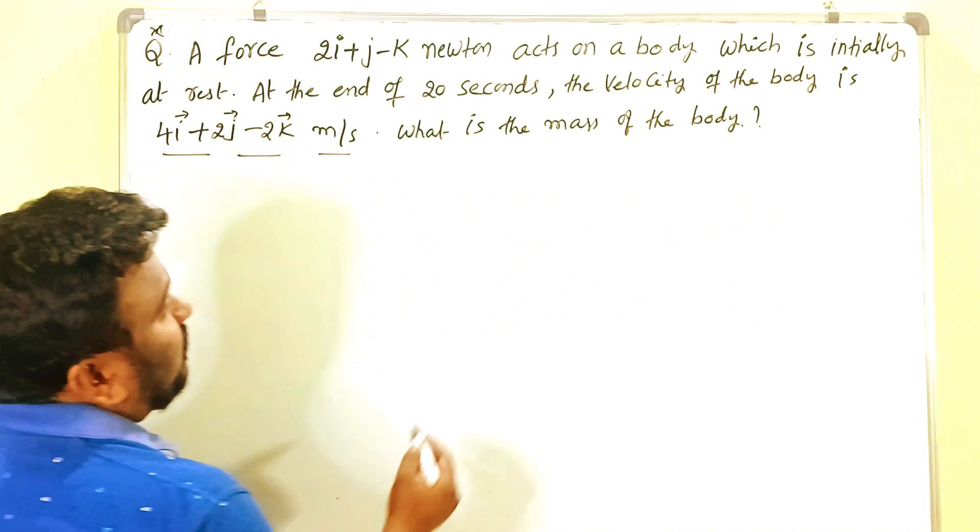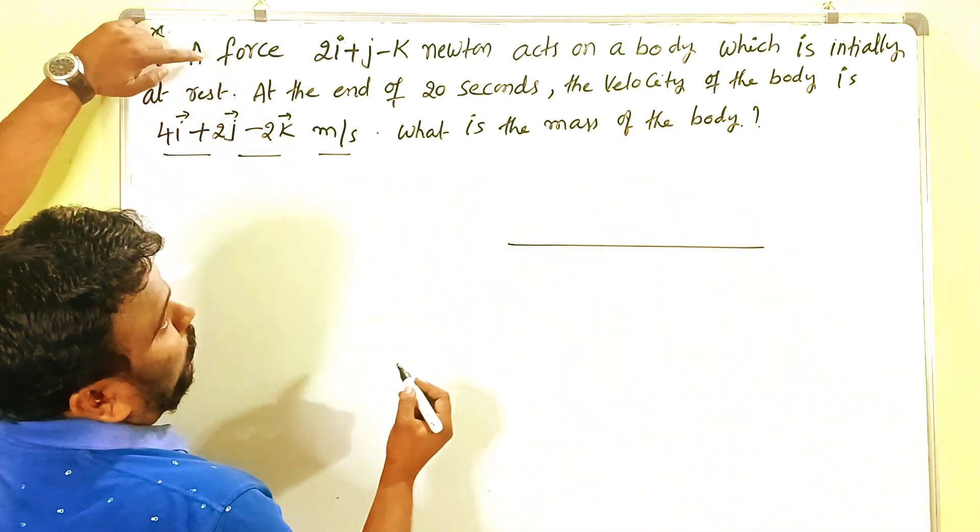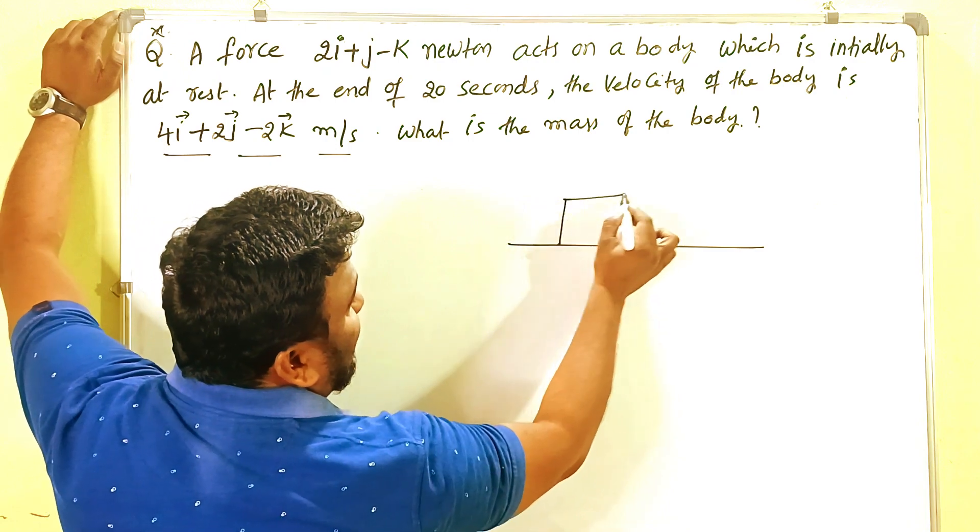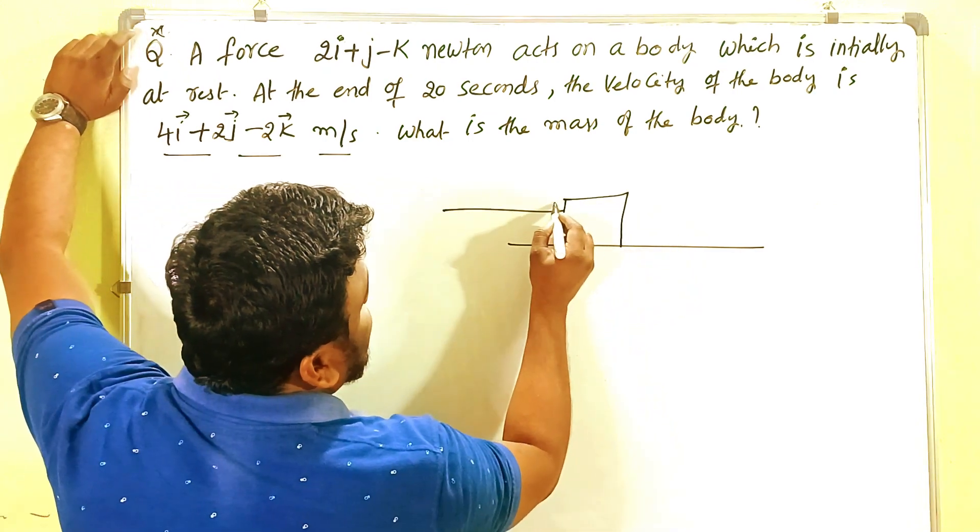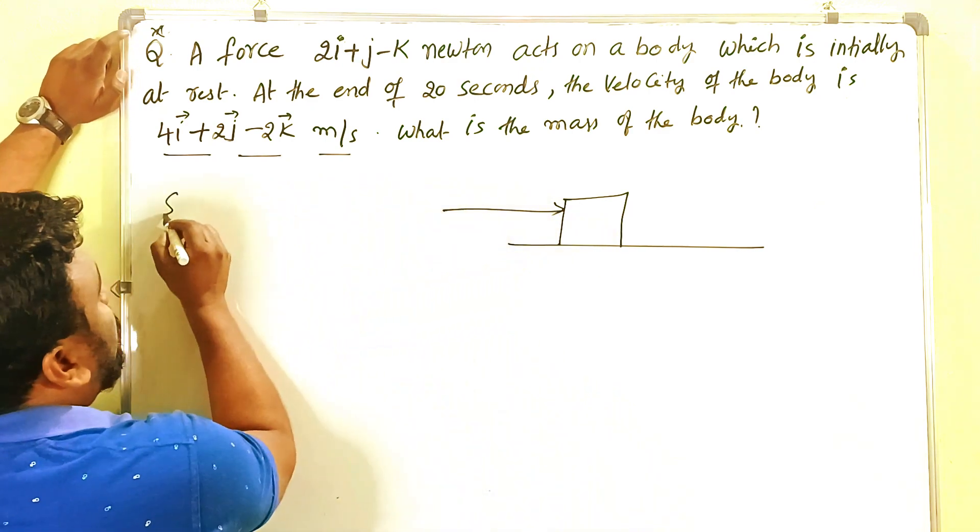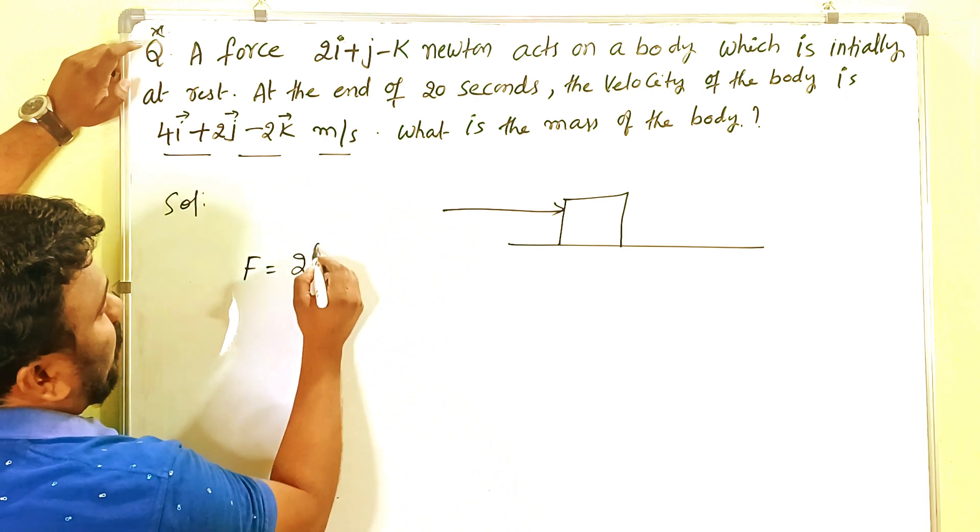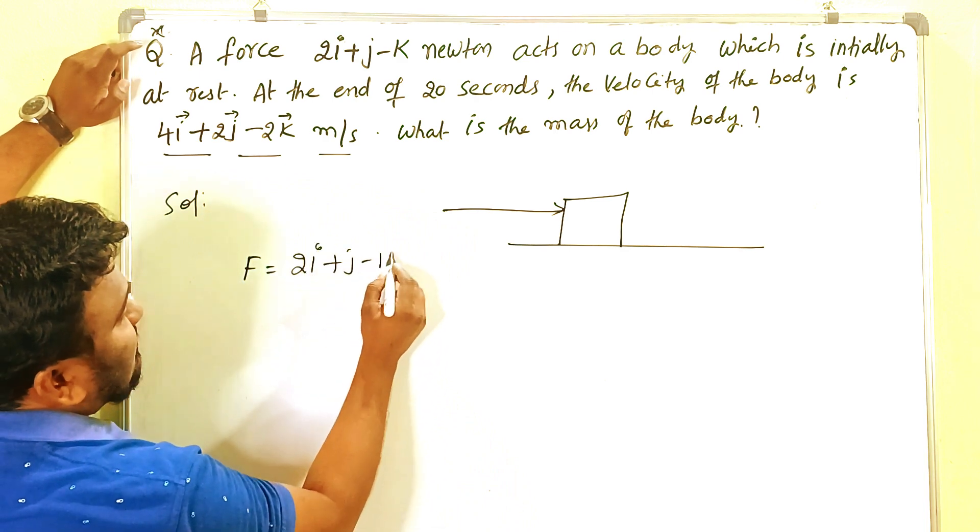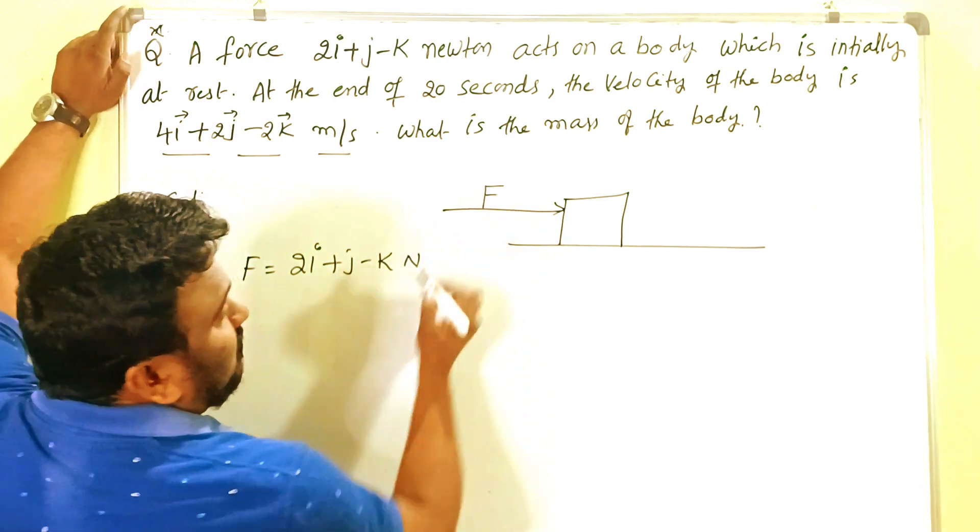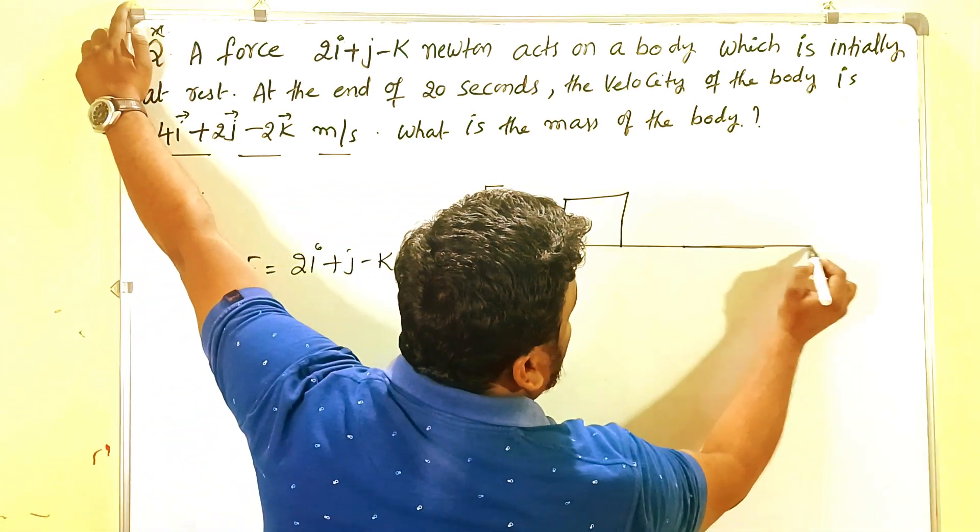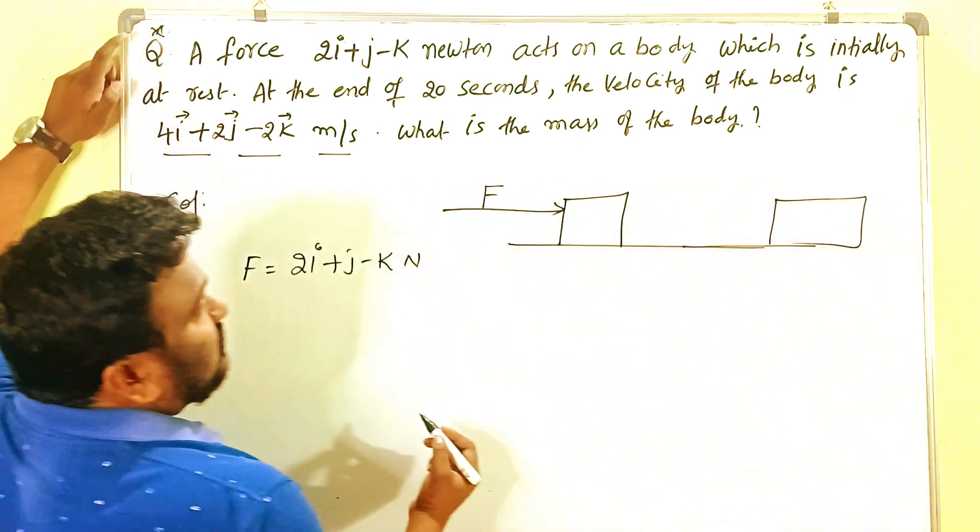What is the given data? Initially, one body is at rest. On that body, how much force is acting? The given force is F equals 2i plus j minus k newtons. This amount of force is acting on the body. After 20 seconds, the body velocity becomes V.